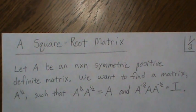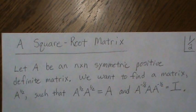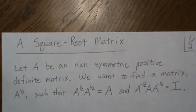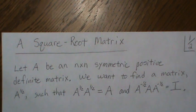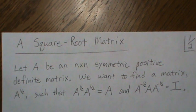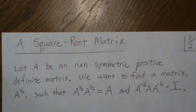Hello, in this video we're going to look at what is called a square root matrix, and it's analogous to if we think about numbers. So if we think about the number 36, and then we take the positive square root of it, which is also called the principal root, we get the number 6. And then if we take 6 times itself, we get the original number back, 36.